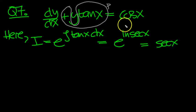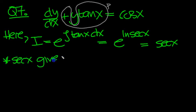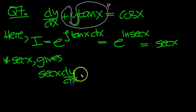So let's multiply by sec x all the way through then. Multiplying by sec x gives, sec x there times the dy/dx